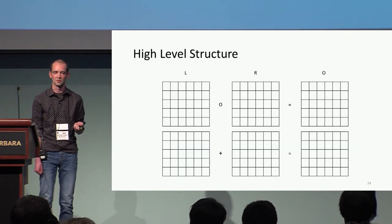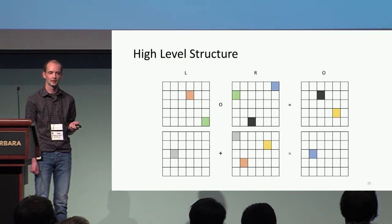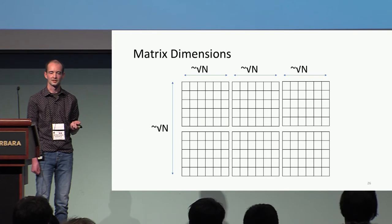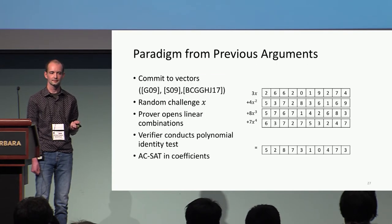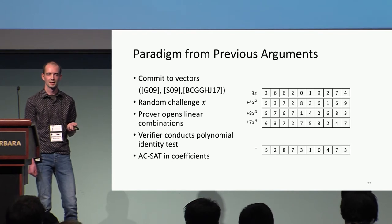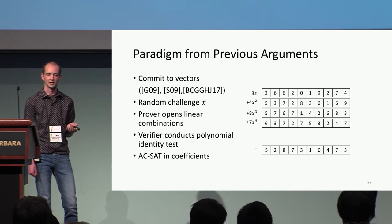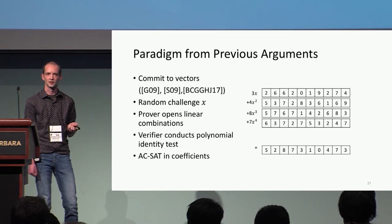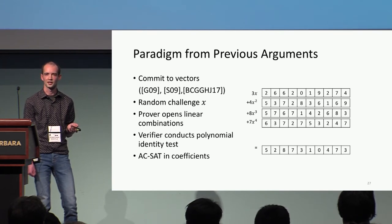This gives rise to a way of checking the circuit: we check multiplication relations for all multiplication gates, and for consistency checks across the matrix and the addition checks, we have some linear consistency constraints. For a larger circuit, we do much the same with larger matrices and similar consistency checks. To get the best efficiency, it turns out you want matrices which are roughly √N by √N. The approach to proving arithmetic circuit satisfiability then has the prover commit to some vectors, receive a random challenge x from the verifier, compute various linear combinations using x, and then the verifier conducts a polynomial identity test with arithmetic circuit satisfiability embedded into the polynomial's coefficients.